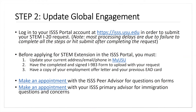Step two: go to the ISSS portal. Log into your portal — like many things, all requests and reporting are done through this system. Make sure you update your address in MyUSU even after you've graduated if you've moved. Make an appointment with our peer advisor if you have questions on the form, or with your primary advisor for immigration status questions.